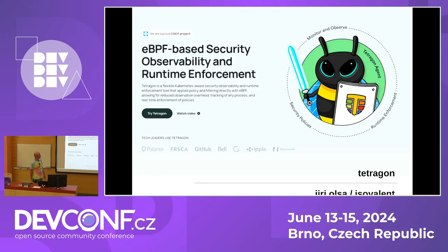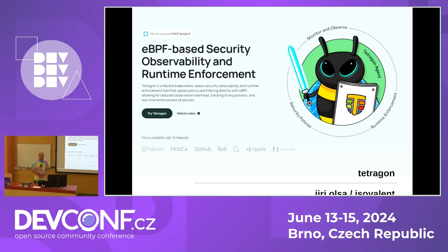My name is Jiří Olsá. I work for Isovalent, which is part of Cisco now. I work as a Linux kernel engineer and I also work on Tetragon, which is the topic of my presentation. The plan is to introduce Tetragon — I'll give a high-level overview of what it's doing and the ecosystem around it, and hopefully most of the talk will be running examples and showing how easy it is to do some monitoring.